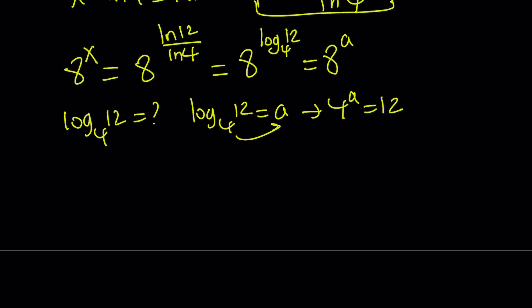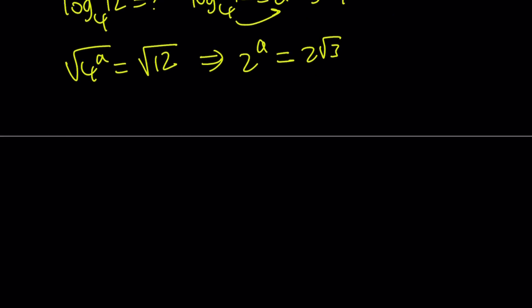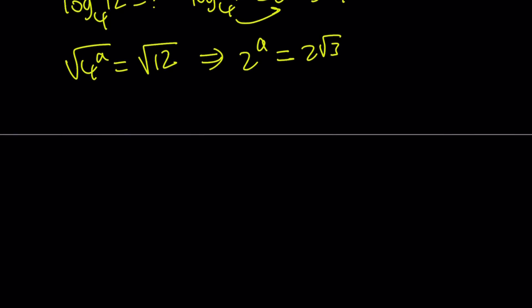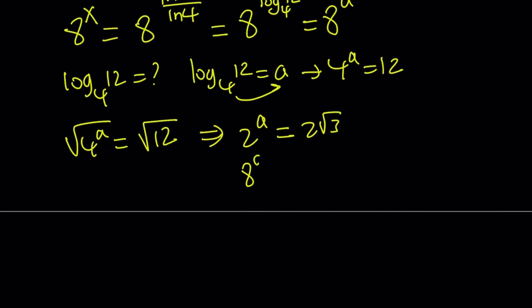Actually, I don't need to find a directly because we called this a, so I'm looking for 8 to the power a. I know 4 to the power a is 12. What is 8 to the power a? I'm going to square root both sides, and notice that square root of 4 to the power a, which is 2 to the power a, cannot be negative. So this is 2 root 3. We got 2 to the power a. We need 8 to the power a, and 8 to the power a is 2 to the power a cubed. So the answer is 2 root 3 cubed, which is 8 times 3 root 3, and that can be written as 24 root 3.